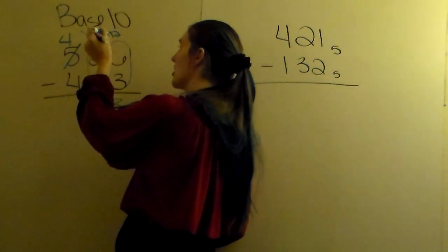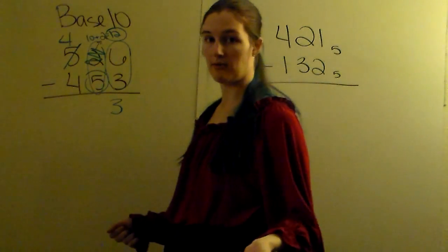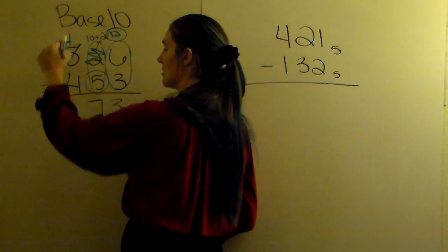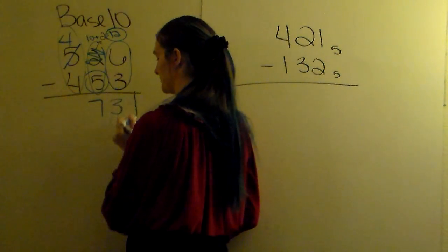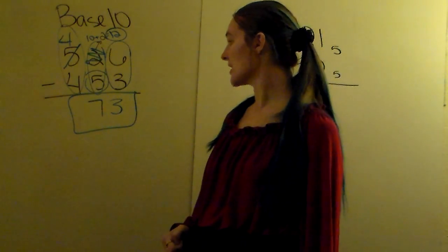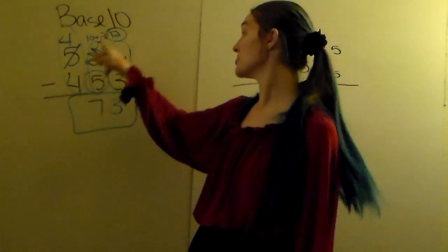So 10 plus 2 is 12. We're going to do 12 minus 5. The 2 has become 12. 12 minus 5 is 7. Next column, 4 minus 4 is 0. So 526 minus 453 gives you 73. We had to borrow.